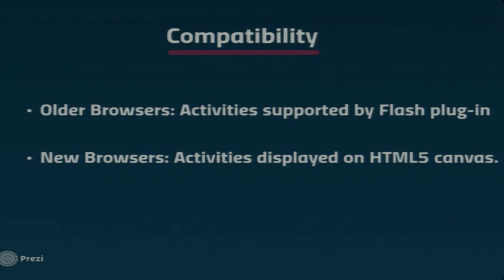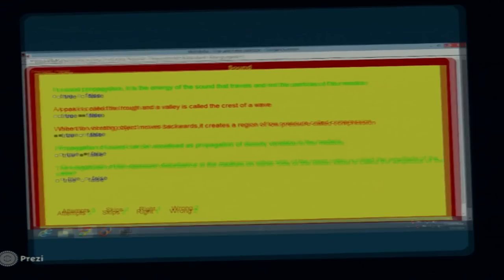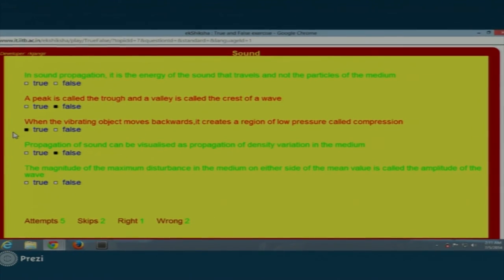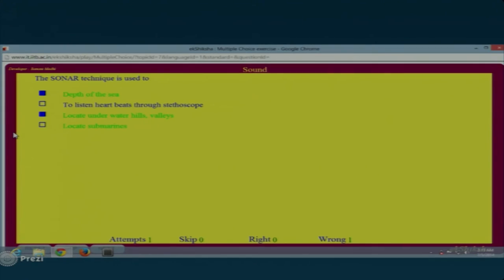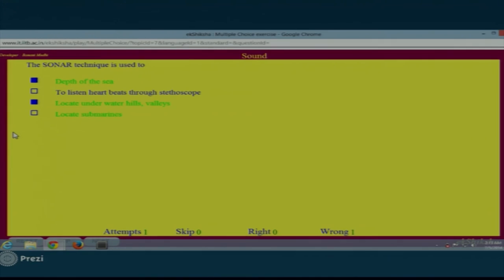Regarding compatibility: will this software run in old and new browsers? The answer is yes. We have two types of activities: those supported by the Flash plugin and those displayed on the HTML5 canvas. Our software can run on all types of devices — laptops, tablets, and smartphones. Here are some screenshots of our interactive exercises, including true/false questions. After attempting each activity, you get an assessment showing how many questions you attempted, skipped, and got correct or incorrect.